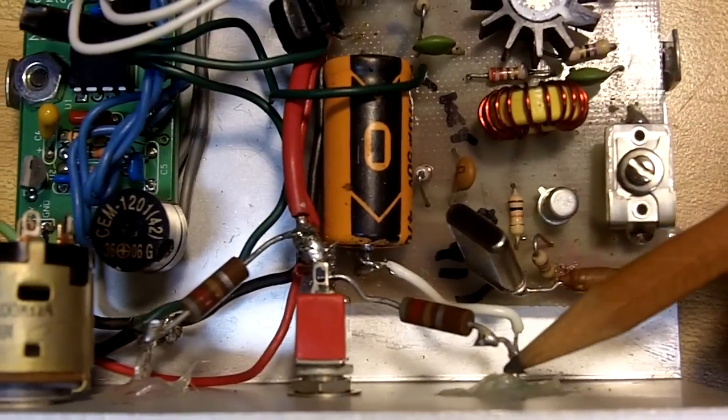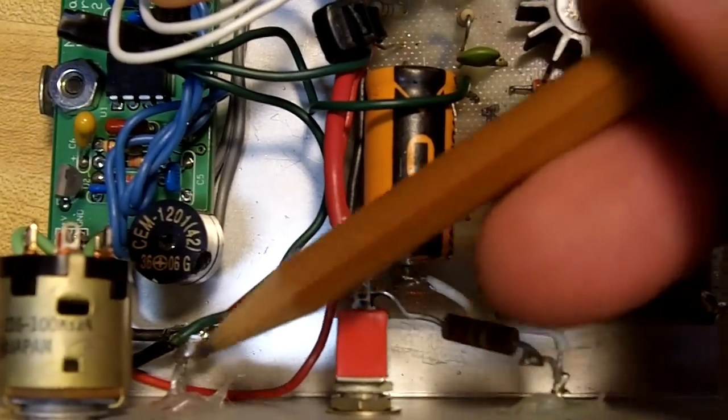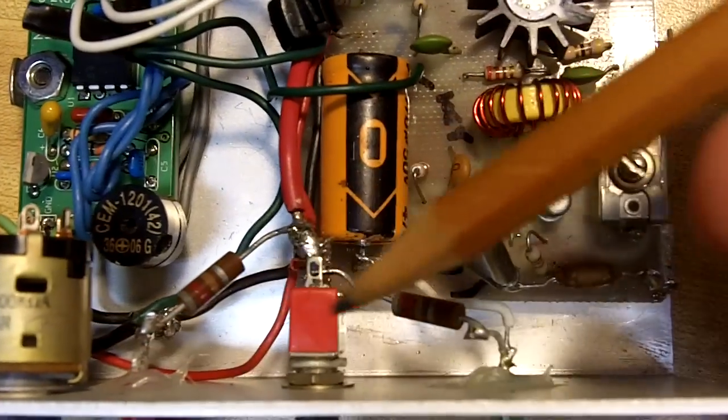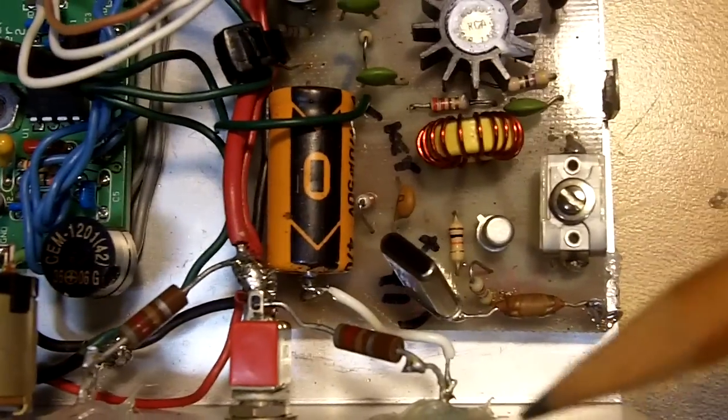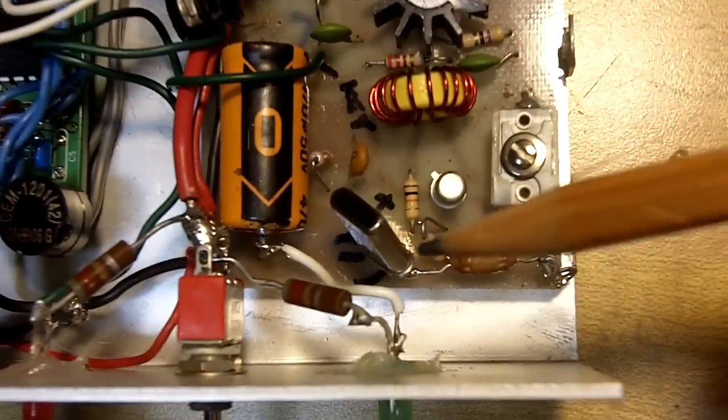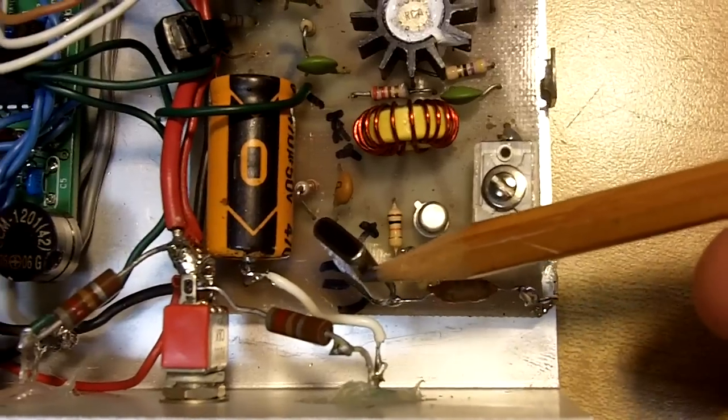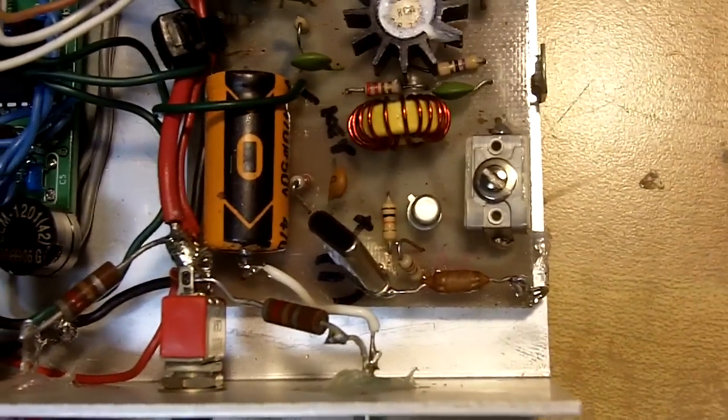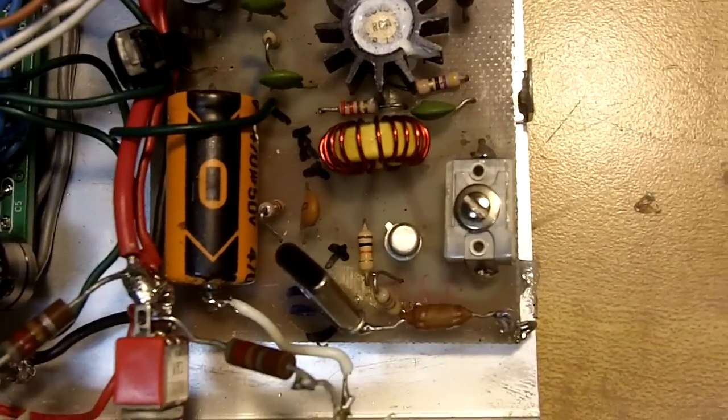But I can adjust my CW speed now real easy. I reversed the wiring to these LEDs so they'll function as I want them to now. And here's the crystal that was off frequency. It was a little bit high. Should be on 28.2235.